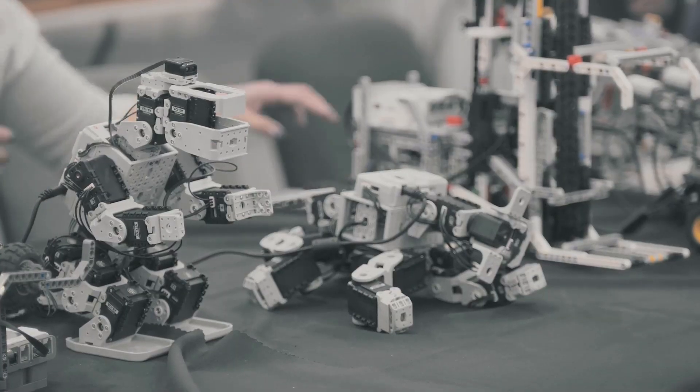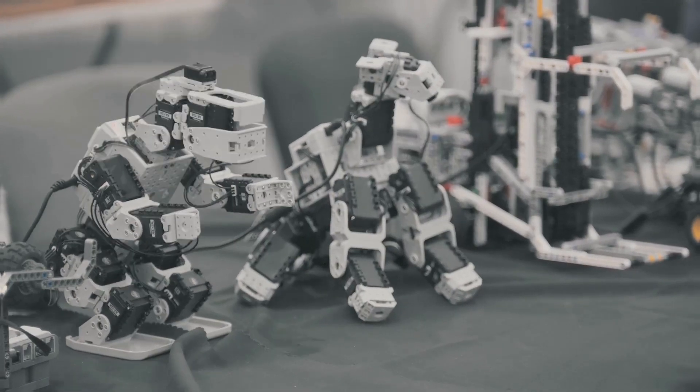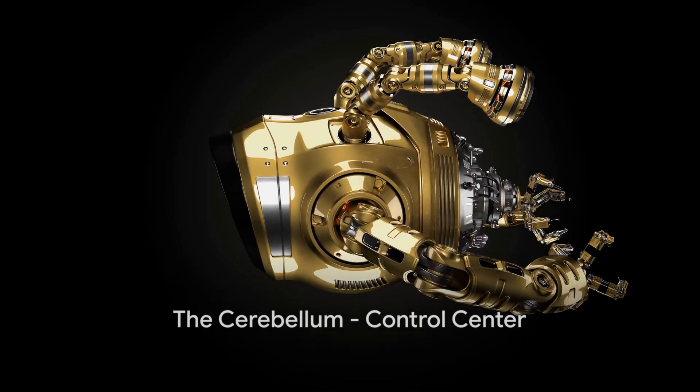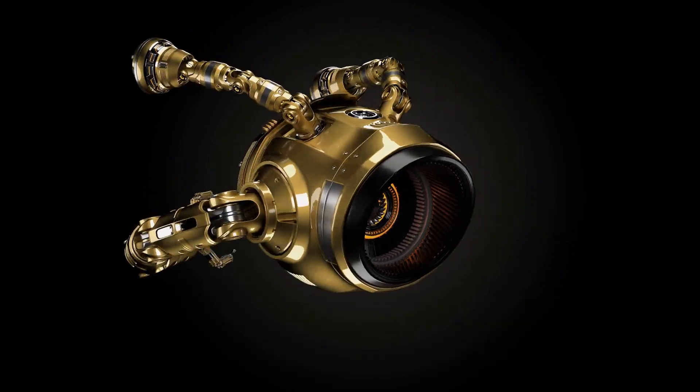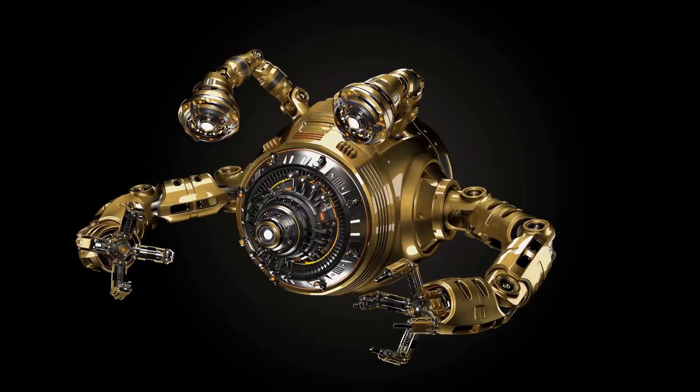But a brain alone is not enough. There is another crucial element that enables the robot to move. Just as our cerebellum controls our movements, the robotic cerebellum is responsible for controlling robotic movements. Now let's dive into the depths of this fascinating control center of the humanoid robot.